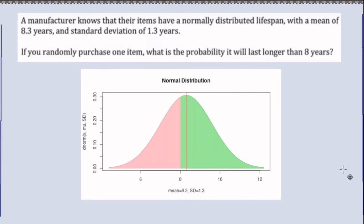But our pnorm would calculate the probability less than 8. So it would be finding this pink area and we want to find that green area.